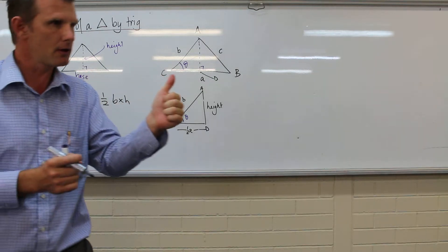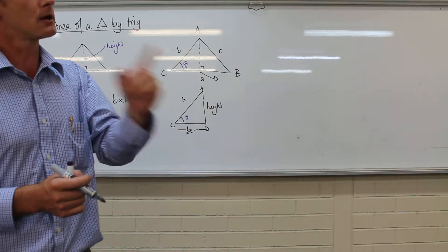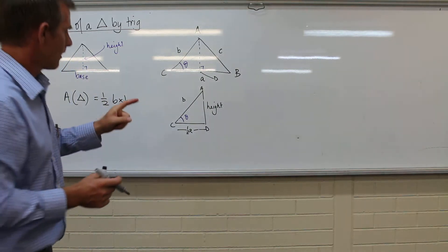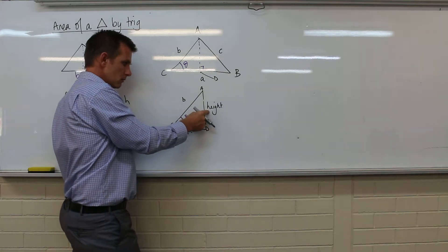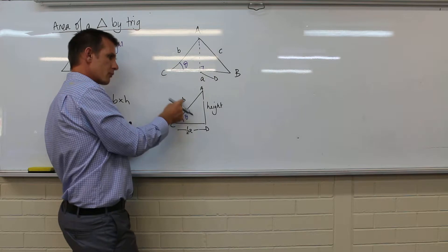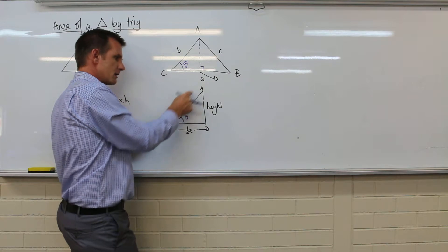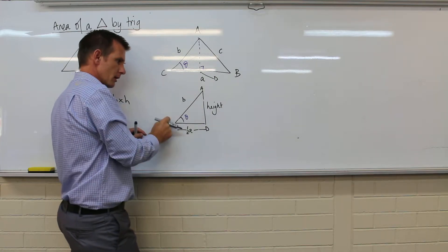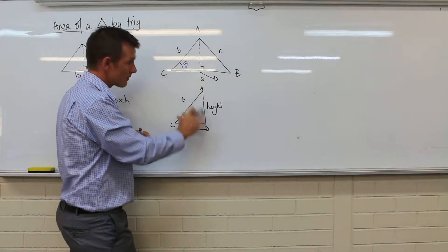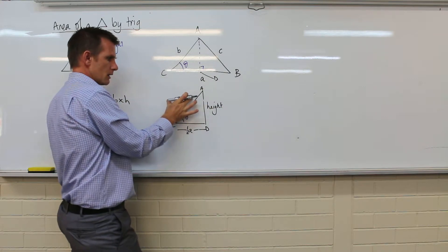Now remember we've got SOHCAHTOA: sine is opposite over hypotenuse, cos is adjacent over hypotenuse, tan is opposite over adjacent. So we've got three trig ratios to look at. Because I want to use this one with this angle, I'm probably going to use this side as well. And the reason I'm going to use that side is it's an exterior measurement that I can get. We could use the half A, it probably would work, but not the way we do it. So I'm going to use that angle, this one here, and this one here.